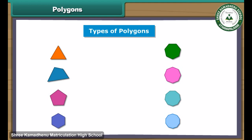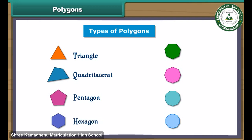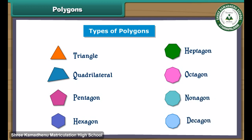Here we look at the following types of polygons: triangle, quadrilateral, pentagon, hexagon, heptagon, octagon, nonagon and decagon. Now we will learn more about each polygon one by one in detail.